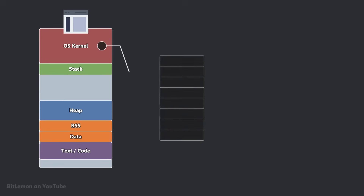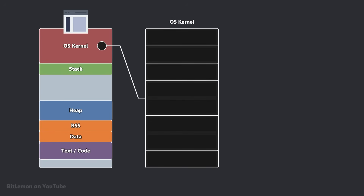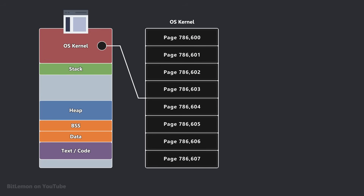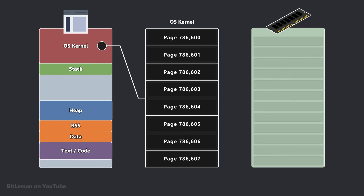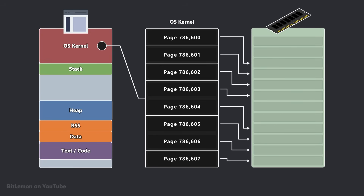The topmost memory region in the virtual memory of a process is reserved for the operating system's pages. These pages are mapped to the operating system's kernel in physical memory, which makes it more efficient for the program to execute privileged code, such as reading and writing to a storage device, or sending data over the network.